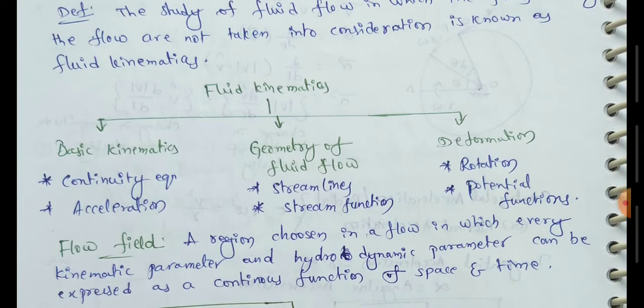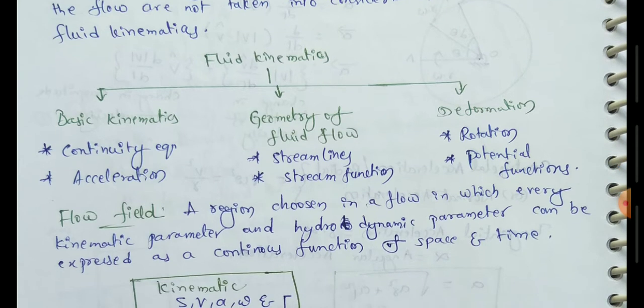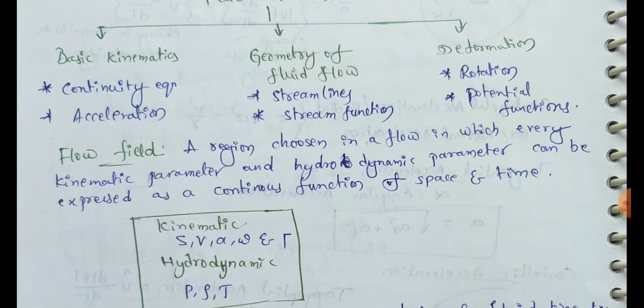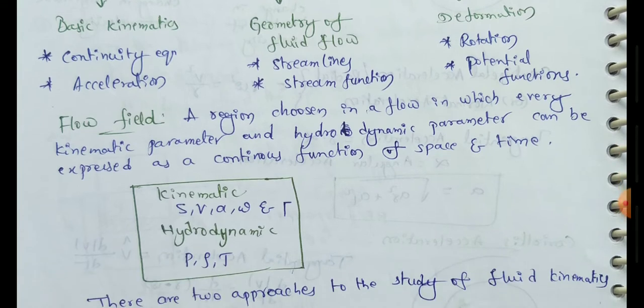Next topic: flow field. A flow field is a region chosen in a flow in which every kinematic parameter or hydrodynamic parameter can be expressed as a continuous function of space and time.